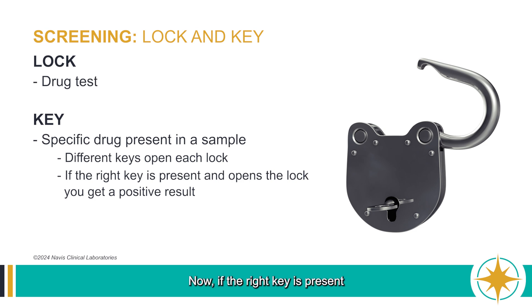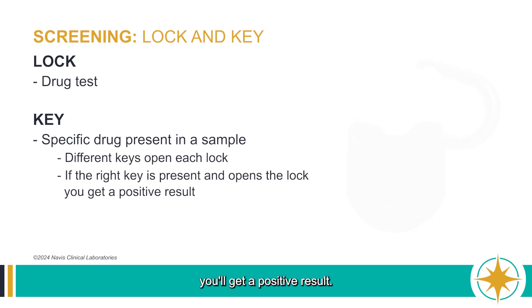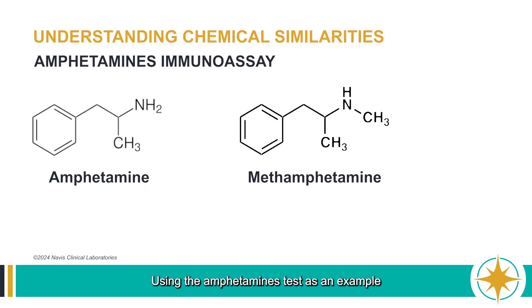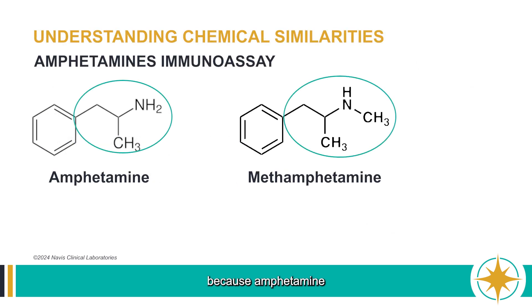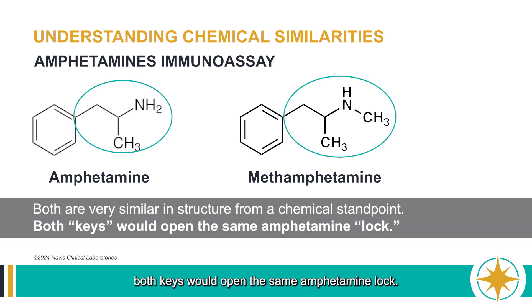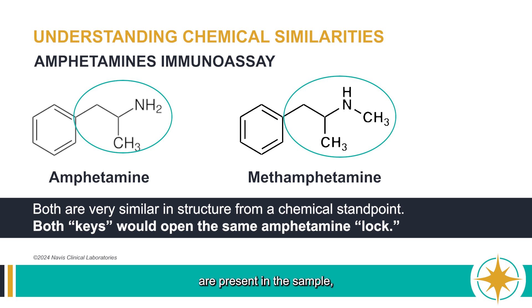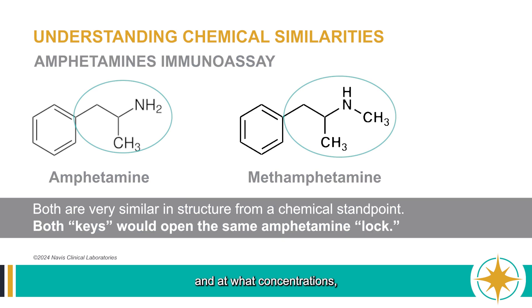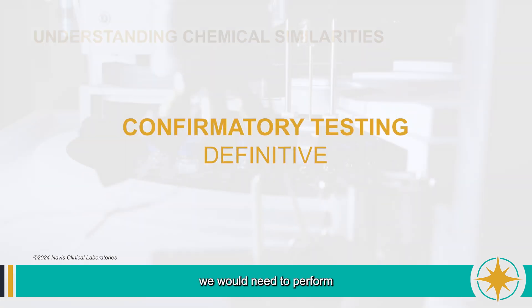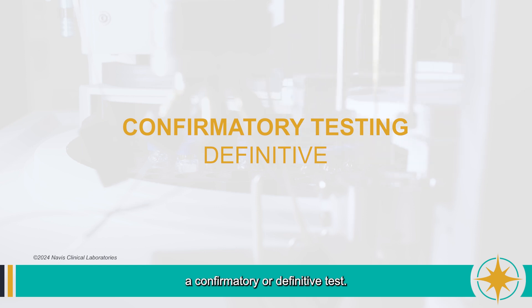If the right key is present and opens the lock, you'll get a positive result. Using the amphetamines test as an example: because amphetamine and methamphetamine are very similar in structure from a chemical standpoint, both keys would open the same amphetamine lock. To identify which specific drugs are present in a sample and at what concentrations, we would need to perform a confirmatory or definitive test.